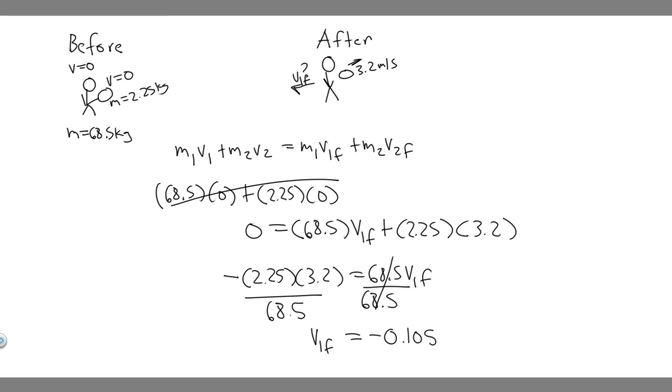So this right here is going to be the velocity. And the negative sign specifies the direction. So this was moving this way, so negative means they're going to travel in the opposite direction. So 0.105, and the units are going to be meters per second.